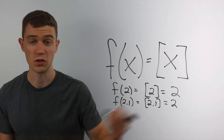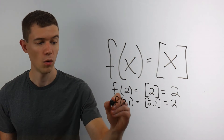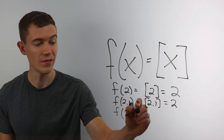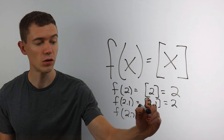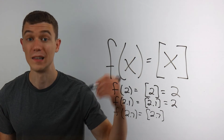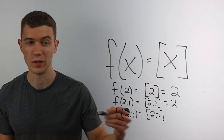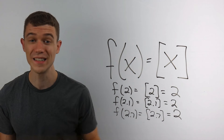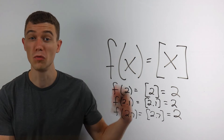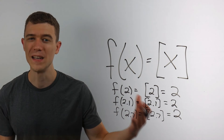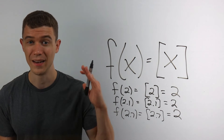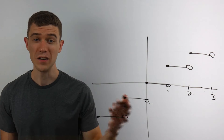It's still just 2. What about if I plug in 2.7? The greatest integer less than or equal to 2.7 is still 2. We don't round up — basically we're always rounding down. That's the idea.